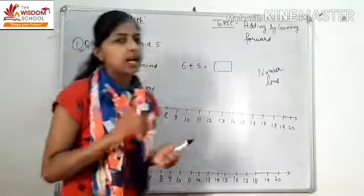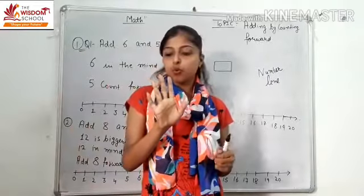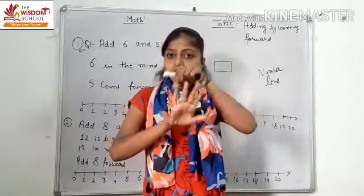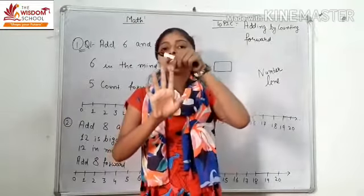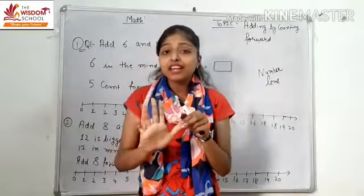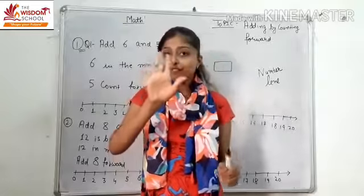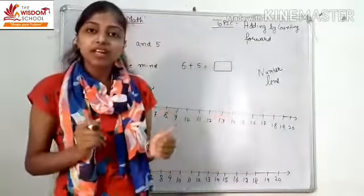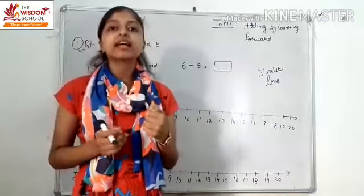Keep six in mind, then count forward five times: seven, eight, nine, ten, eleven. It means six plus five equals eleven.